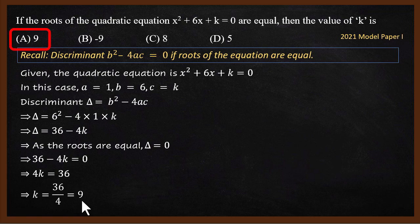We use the fact that if the roots are equal, discriminant is 0, and we substitute it for the values. Next question.